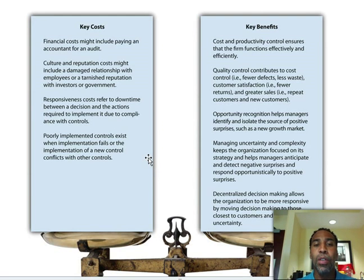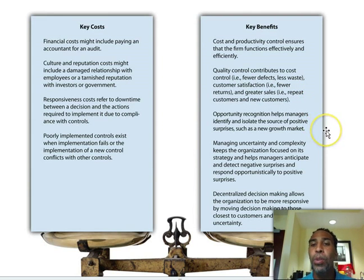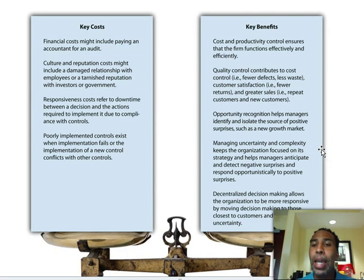Key benefits: cost and productivity control ensures a firm functions effectively and efficiently. Quality control contributes to cost control — fewer defects, less waste, greater customer satisfaction, repeat customers, and new customers. Opportunity recognition helps managers identify and isolate the source of positive surprises such as new growth.